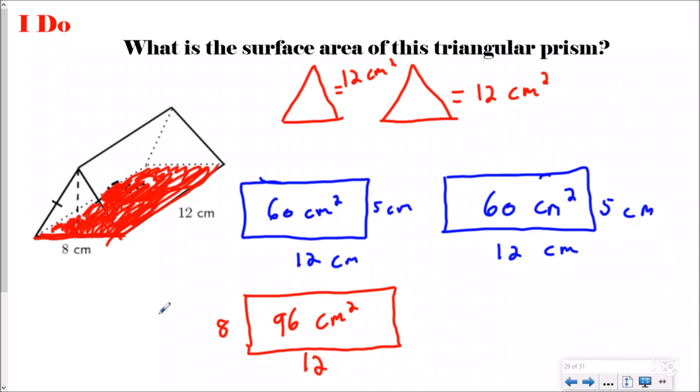I'm going to do 12 plus 12 plus 60 plus 60 plus 96. So I'm going to have 24 for my triangles, 120 for my two blue sides and 96.